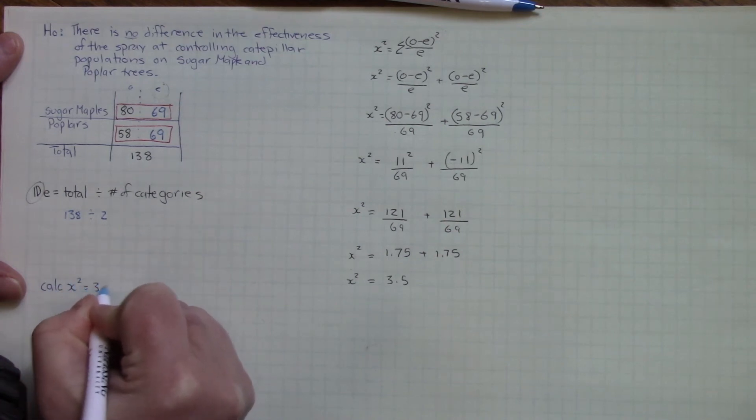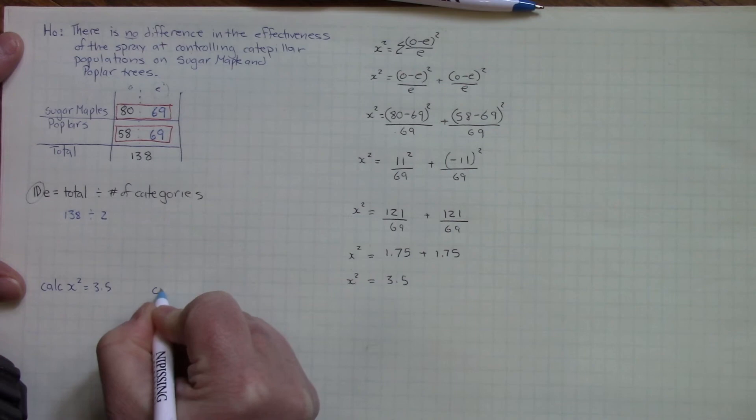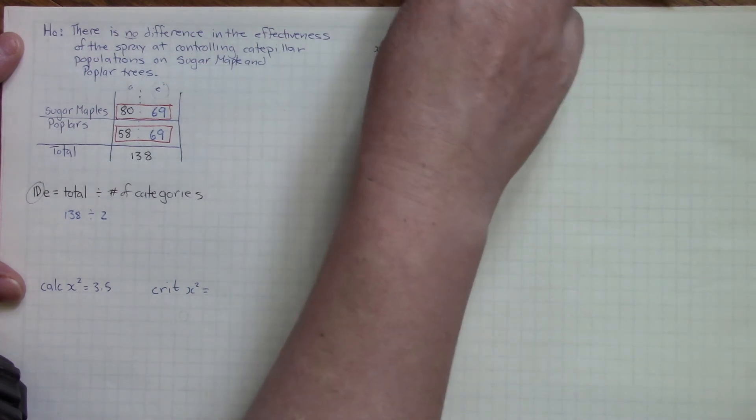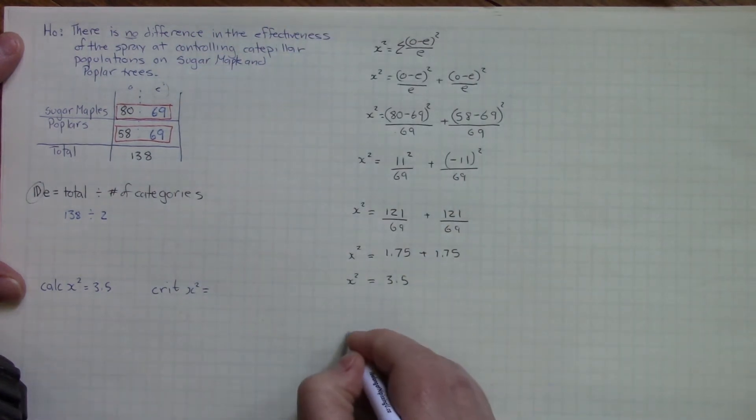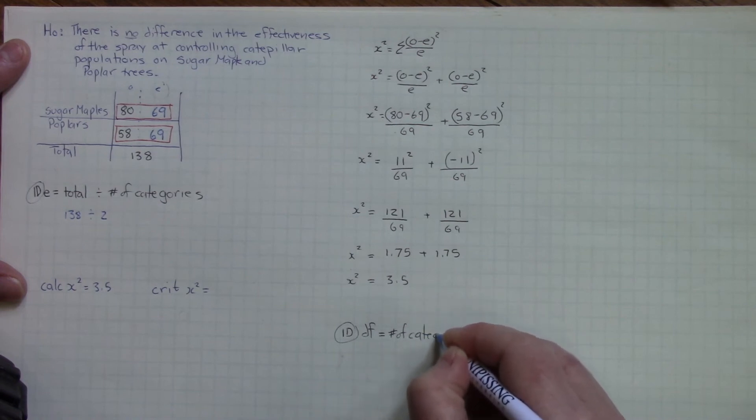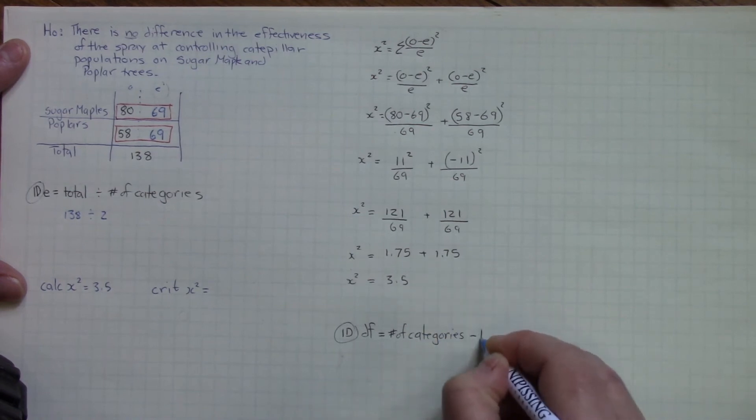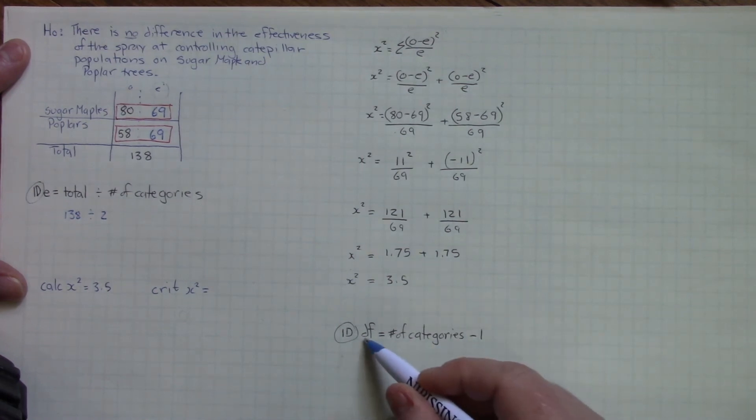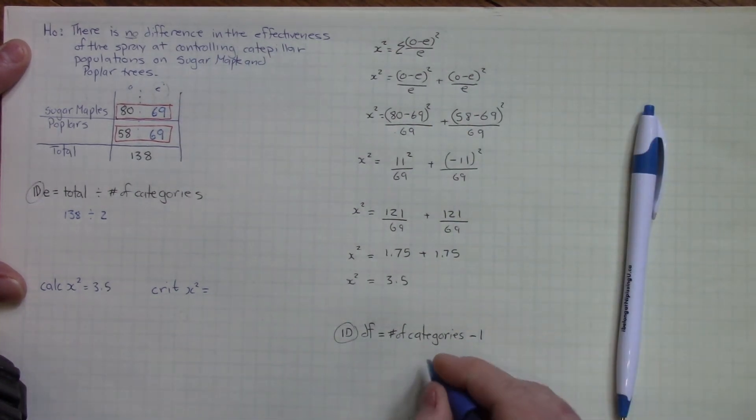Calculated chi-squared equals 3.5, but we still need to find out critical chi-squared. What does it equal? To find critical chi-squared, we need to find our degrees of freedom. So in a one-dimensional equation, degrees of freedom equals the number of categories minus 1. This is similar to the t-test. Remember, the degrees of freedom in the t-test was n minus 1. So now instead of an n, we just have the number of categories. So in our case, we have two categories minus 1, so our degrees of freedom equals 1.